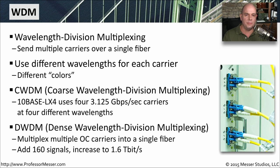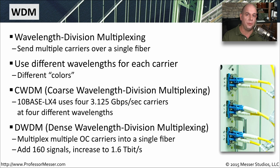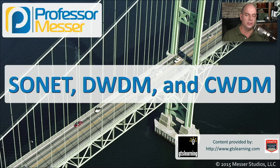You could also see a type of multiplexing called DWDM, or Dense Wavelength Division Multiplexing. When we say dense, we really mean very dense — this is taking many different optical carriers into a single fiber. There can be 160 signals going across that same fiber, giving a total of 1.6 terabits per second of bandwidth. If you're a carrier trying to maximize the amount of traffic you can put through a single pair of fibers, you're probably going to want to look at one of these flavors of WDM.